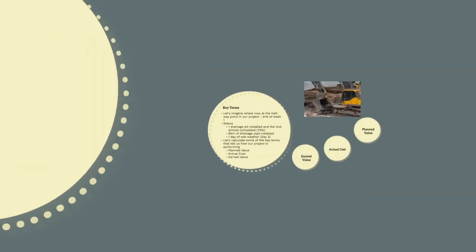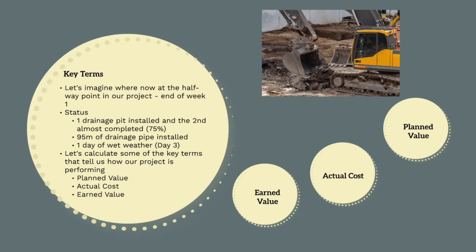Let's now imagine we're halfway through our project, so we're now at the end of week 1 and we want to try and work out whether the project is going well or whether the project is going badly. At the end of week 1, we've installed 1 drainage pit and the second one is 75% complete. We've installed 95m of drainage pipe and we had 1 day of wet weather. Let's now look at calculating some objective measurements that tell us how the project is performing.